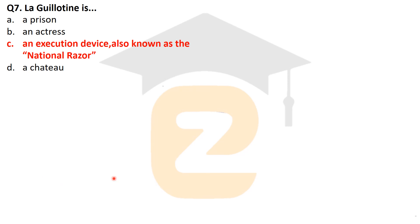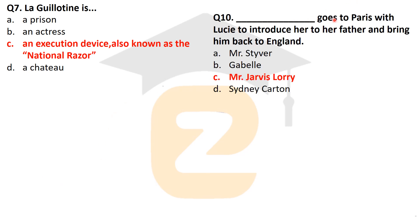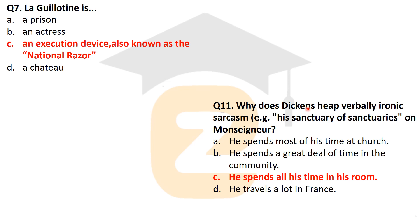The next question: who goes to Paris with Lucy to introduce her to her father and bring him back to England? That was Mr. Jarvis Lorry. Mr. Jarvis Lorry was the person in the novel who goes to Paris with Lucy, introduced her to her father Dr. Manette, and brought Dr. Manette back to England.